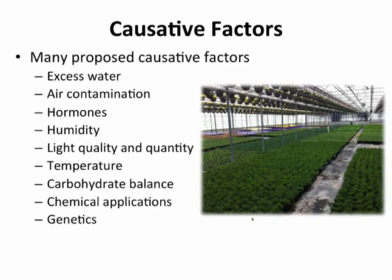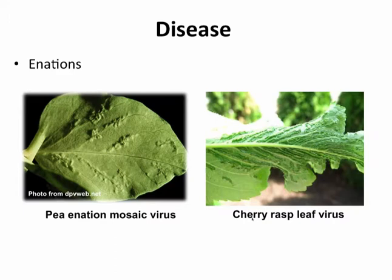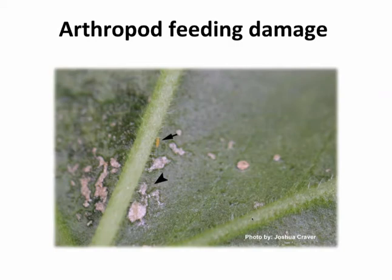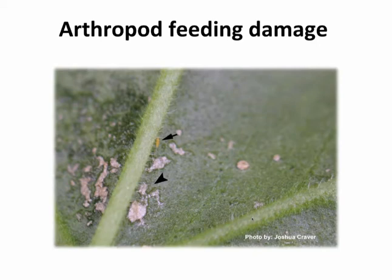Plants have diseases, and enations are one of those responses that look very similar to some of these intumescences, edema, or other physiological disorders. Here on the screen you can see two different species with a virus infection. We see these enations — raised, pimply or blister-like lesions near the venation or veins on the leaves — and they often have some vascular tissue associated with those. We certainly see bumps and blisters resulting from disease infections. And of course, arthropod or pest feeding — on this slide we have a thrips identified, and the resulting damage by these pests could be interpreted as some sort of physiological disorder as well.